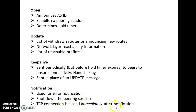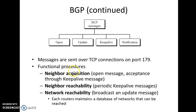The TCP connection is closed immediately after a Notification. These are very important points. The different BGP messages are Open, Update, Keep Alive, and Notification. These four messages are responsible for neighbor acquisition, neighbor reachability, and network reachability. Neighbor acquisition is possible with Open and Keep Alive messages. Neighbor reachability is possible by periodic sending of Keep Alive messages. Network reachability is possible because of broadcasting of an Update message. All BGP messages are sent over a TCP connection on port number 179.